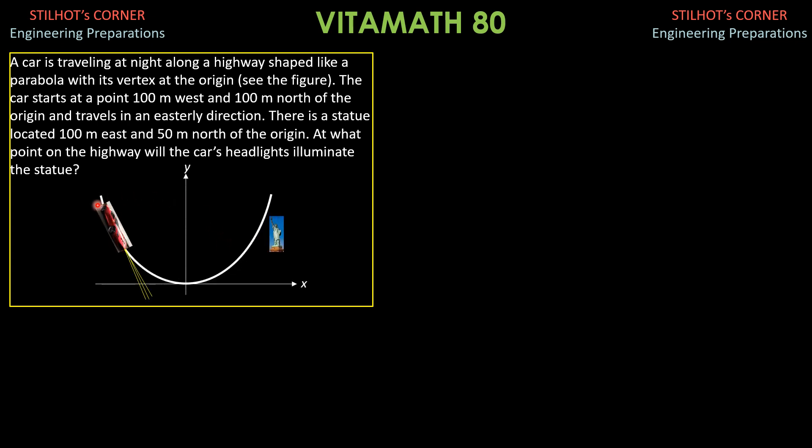Here is the given figure. This is the highway which is parabolic in shape and it is open upward. The equation of the parabola, we have positive x and negative x. The standard equation with vertex at the origin is x squared equals, because it is open upward, constant, which is the lattice rectum times y.